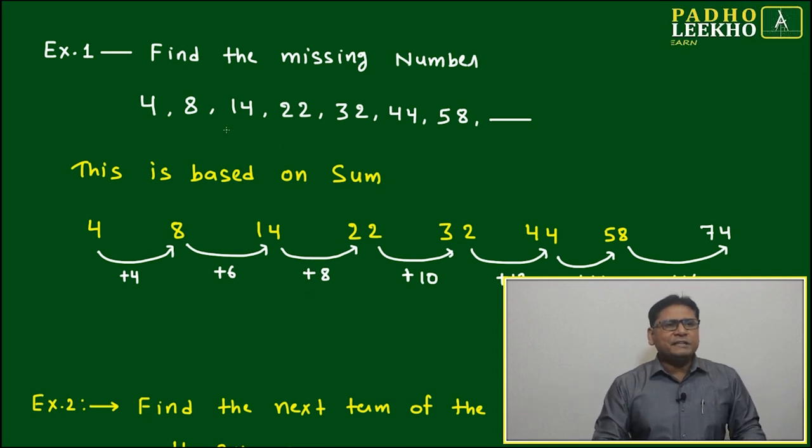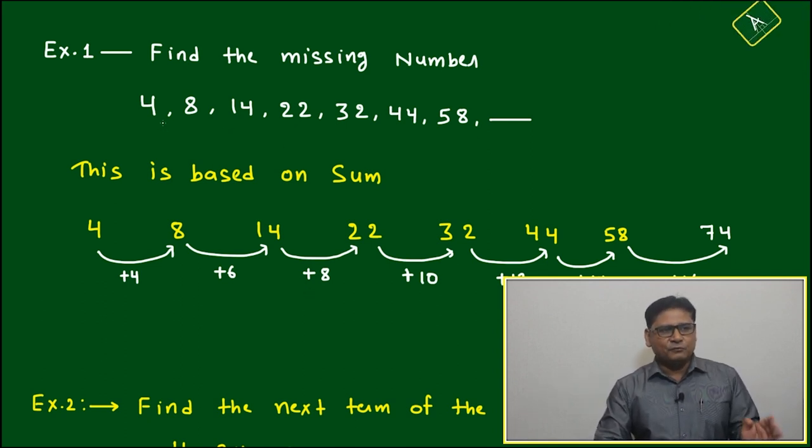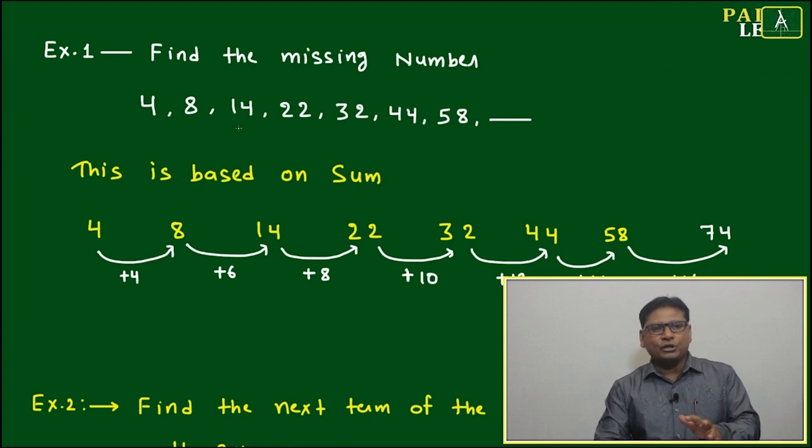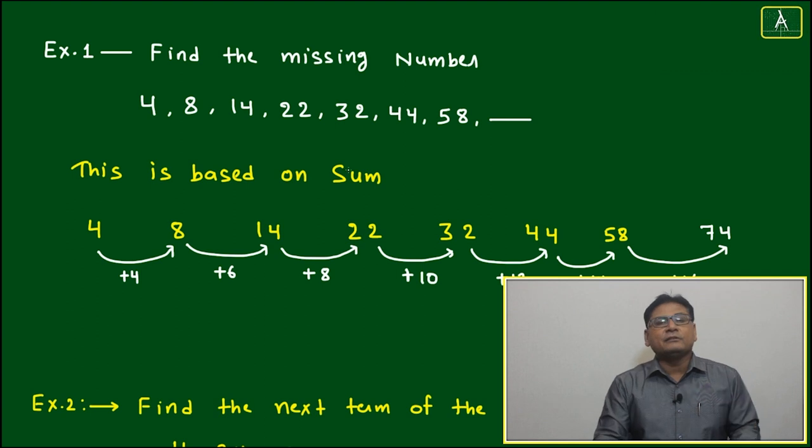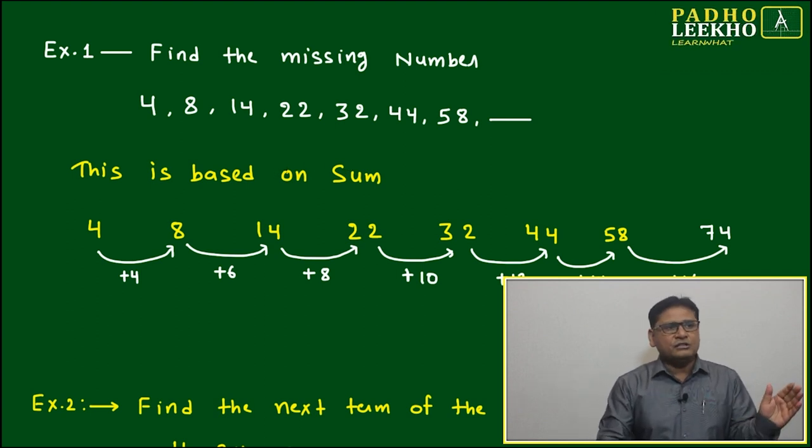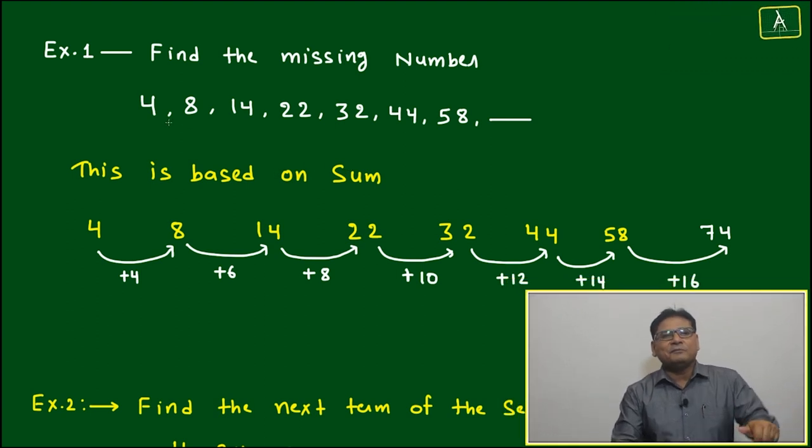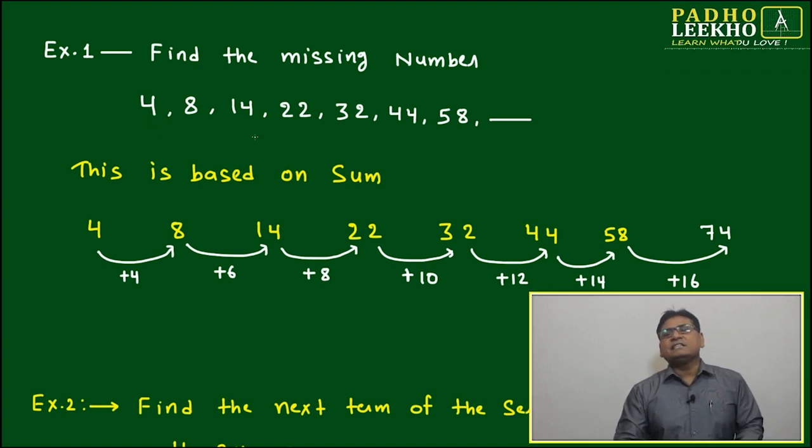Number series type 1. What is given here? One series is given starting with 4, 8, 14, 22, 32, 44, 58. We are not able to figure out what is happening immediately because it starts with a single digit number, then jumps to two-digit numbers and keeps on increasing.